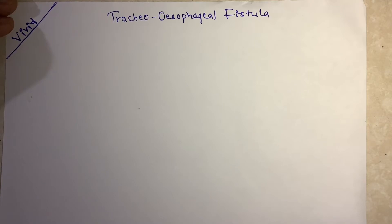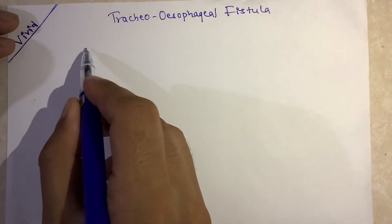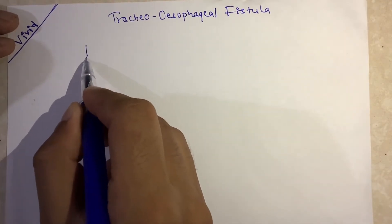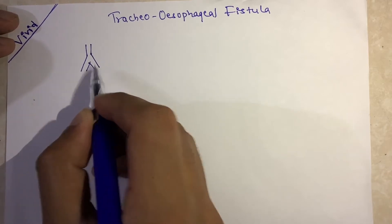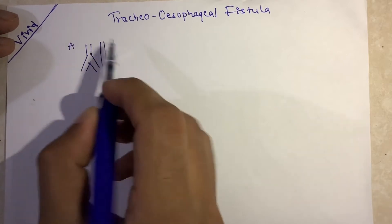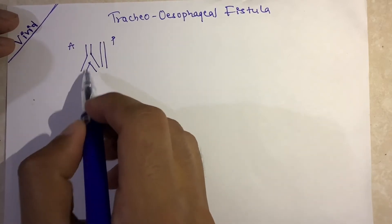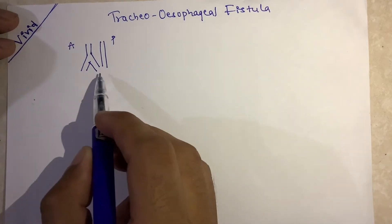I will be sharing you my trick to how I remember types of tracheoesophageal fistula. So firstly, drawing a normal trachea and esophagus. This is the anterior part of our body, and the posterior we have trachea, and this is a continuous esophagus. Normally we have this type of arrangement.